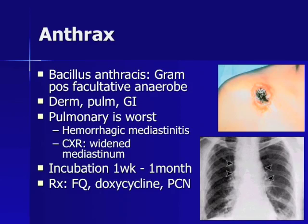Anthrax, the most likely of all category A agents to be weaponized, is caused by Bacillus anthracis, a gram-positive facultative anaerobe. Anthrax causes dermatologic, pulmonary, and gastrointestinal manifestations. The appearance of cutaneous anthrax is very similar to that of the brown recluse spider bite and has been confused with it in the literature. The pulmonary form is the most likely manifestation in a bioterrorist attack from spores released into the air, presenting as a fulminant pneumonia with hemorrhagic mediastinitis; chest radiographs can demonstrate a widened mediastinum. The incubation period is from one week to one month, so prophylactic therapy with a fluoroquinolone is instituted for one month. Other therapies include doxycycline and penicillin. Advanced pulmonary anthrax carries a very poor prognosis and only early treatment can improve outcomes.